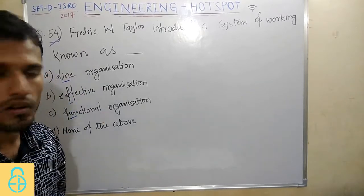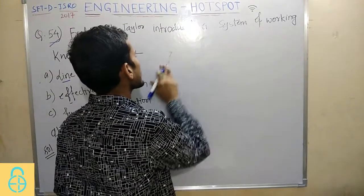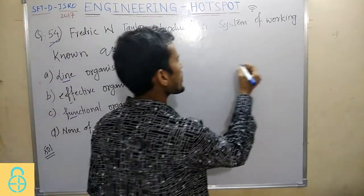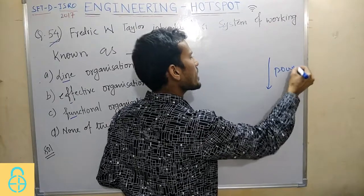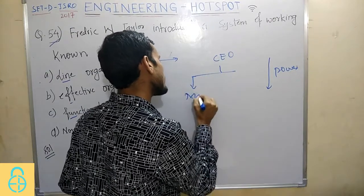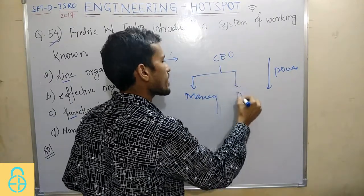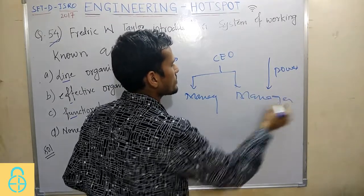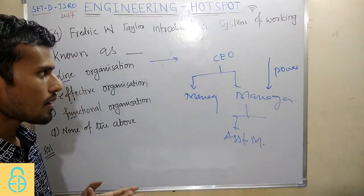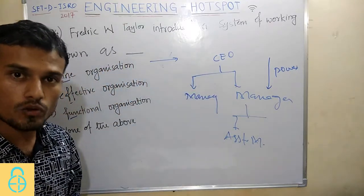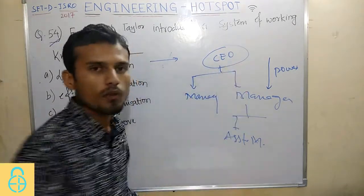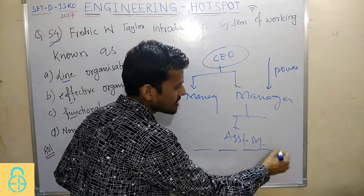First is Line Organization. Line Organization follows a top-to-bottom approach because power flows from top to bottom. At the top we have a CEO, under whom we have different managers, and under each manager we have an assistant manager. This is the top-to-bottom hierarchy. In this type of organization, the CEO holds maximum power and the bottom level has the least power.